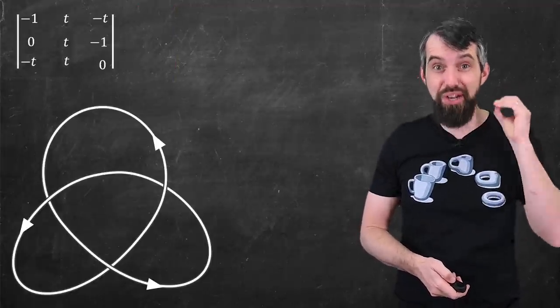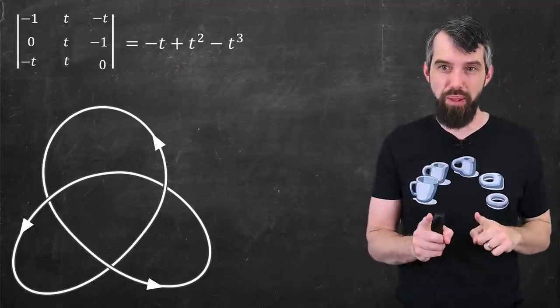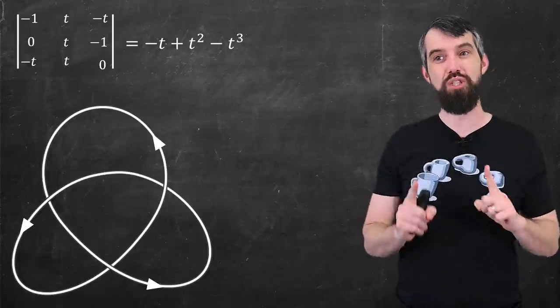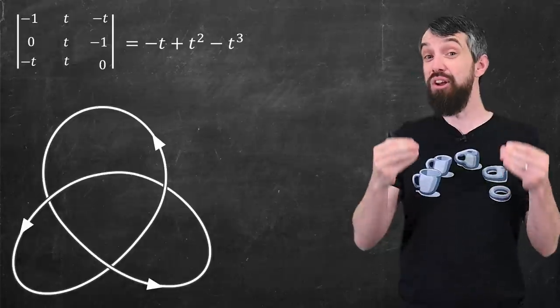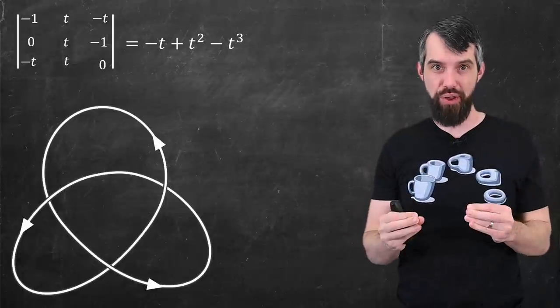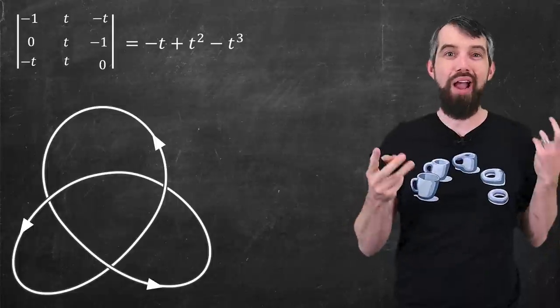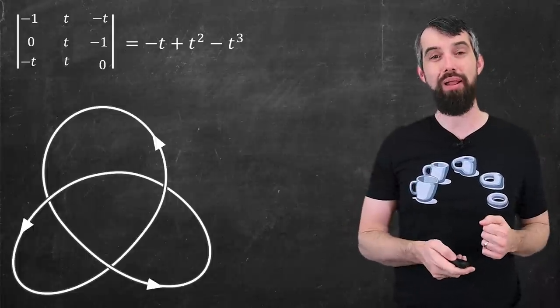The final thing is I'm going to take the determinant of that matrix, and that gives me this polynomial minus t plus t squared minus t cubed. This is the Alexander polynomial of the trefoil knot. But why? Why do we care that we have this polynomial?